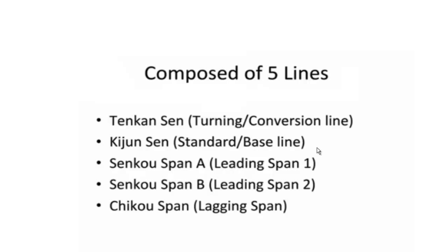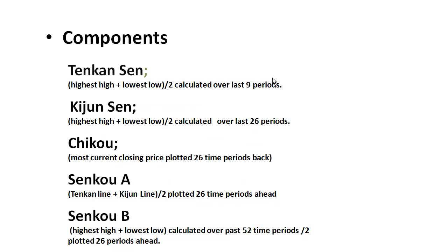Chikou is a signal line projected behind price. Tenkan-sen is calculated by taking the highest high and the lowest low during the last 9 periods, or 9 candles, and dividing by two. Kijun-sen is the same thing - highest high and lowest low calculated over the past 26 periods, divided by two. Chikou is the most current closing price plotted 26 periods behind. Senkou A is Tenkan-sen and Kijun-sen divided by two, plotted 26 periods into the future - which is very important to understand.